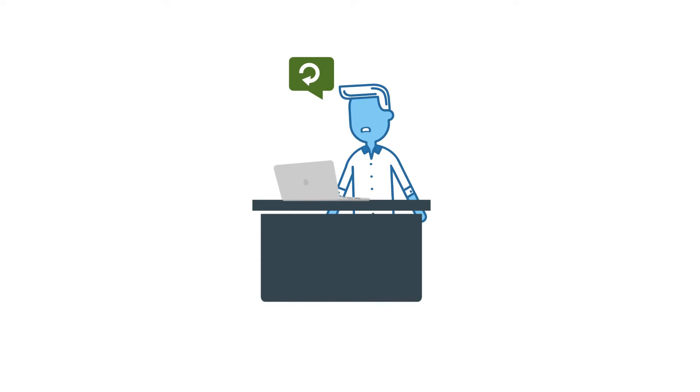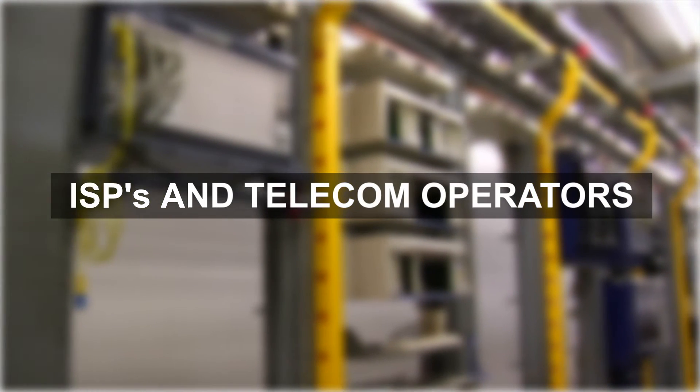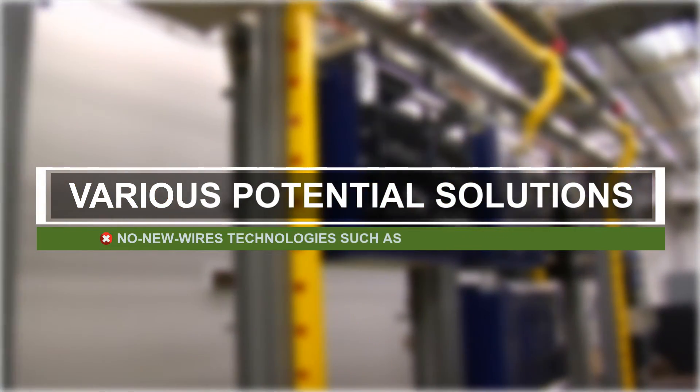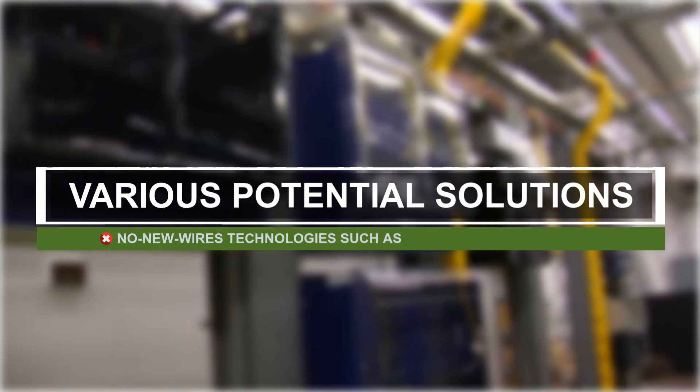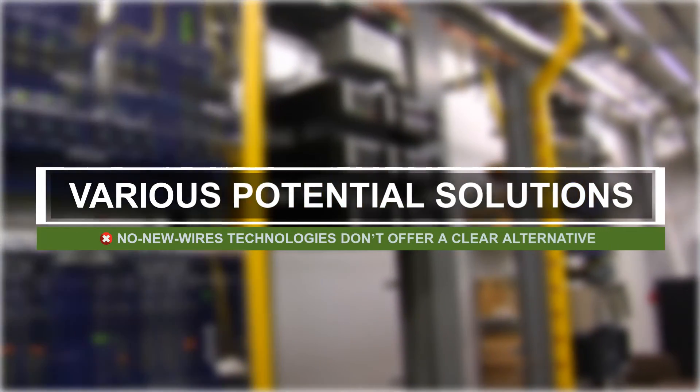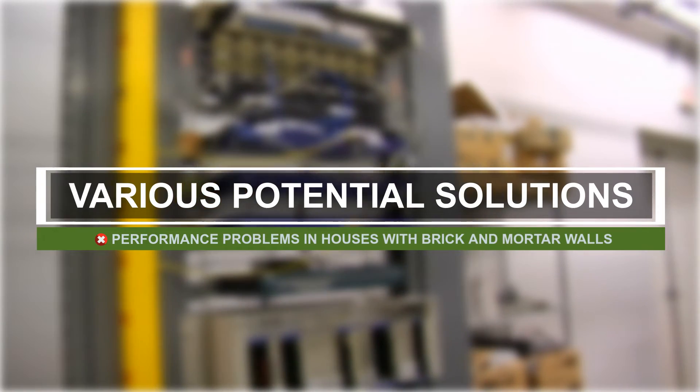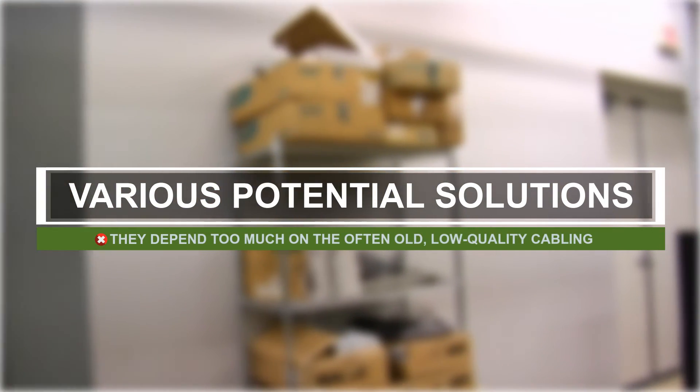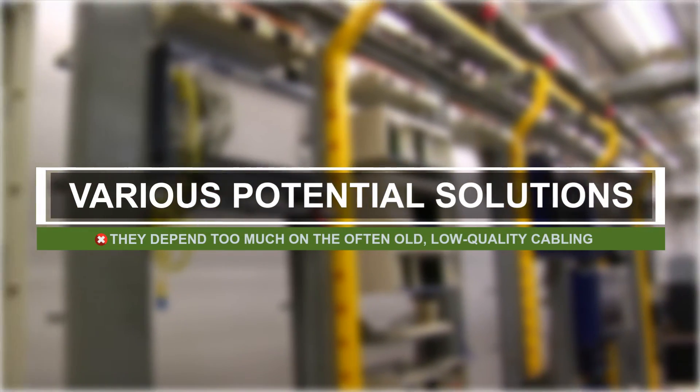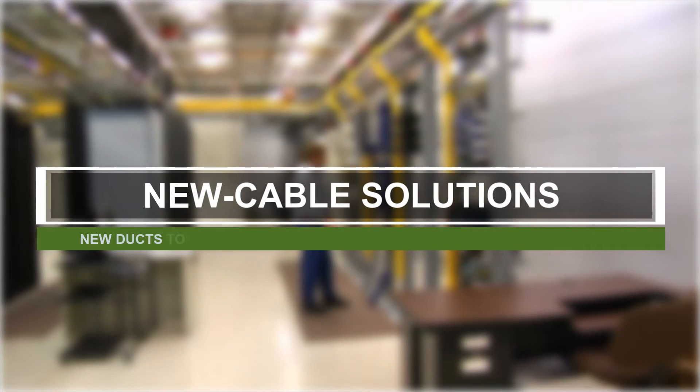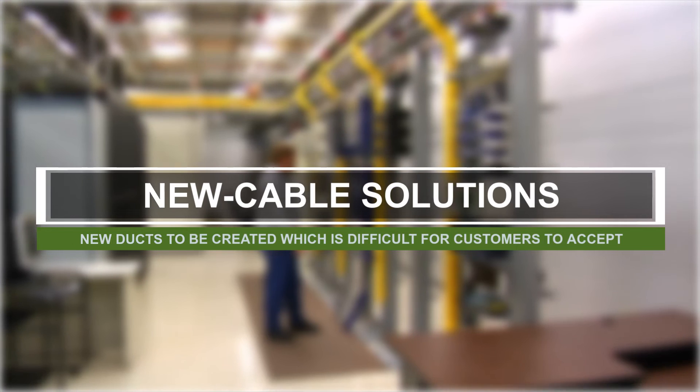ISPs and telecom operators have been investigating various potential solutions. No new wires technologies such as wireless mesh or power line don't offer a clear alternative. These solutions have performance problems in houses with brick and mortar walls, or they are degraded since they depend too much on the existing and often old low-quality cabling. New cable solutions such as ethernet cabling require new ducts to be created, which is difficult for customers to accept.